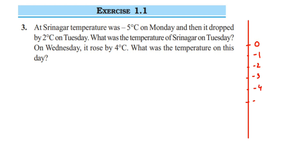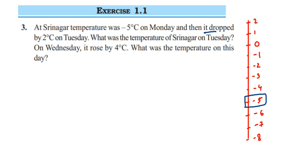So on this number line, going down from zero: minus 1, minus 2, minus 3, minus 4, minus 5, minus 6, minus 7, minus 8. Above zero we have 1, 2, and so on. Now, they have given that the temperature of Srinagar on Monday was minus 5 degrees Celsius, so let us mark minus 5 here. This is the current temperature.